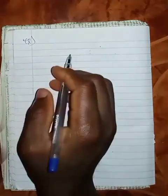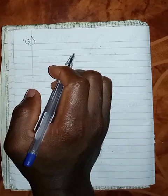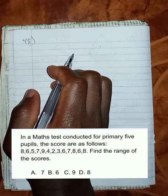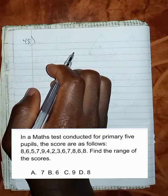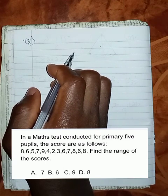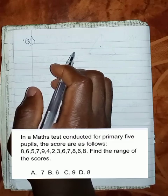Question 48 says, in a math test conducted by Primary 5 pupils, the scores are as follows: 8, 6, 6, 7, 9, 4, 2, 3, 6, 7, 8, 6, 8. Find the range of the scores.